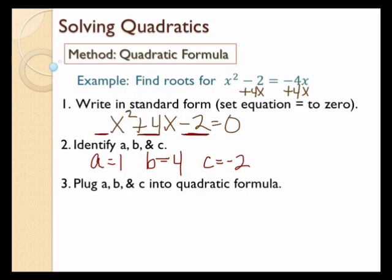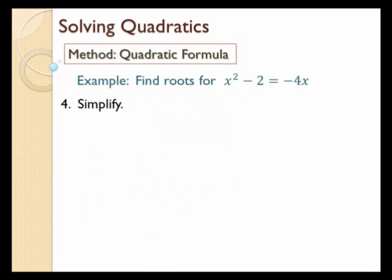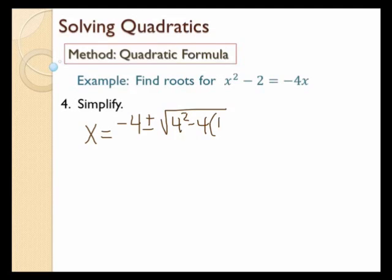Let's go ahead and plug it into the quadratic formula. So x equals negative b plus or minus the square root of b squared minus 4ac, and that's going to all be over 2a. The fraction is not just under the radical or under that negative 4 at the front — it's under everything.